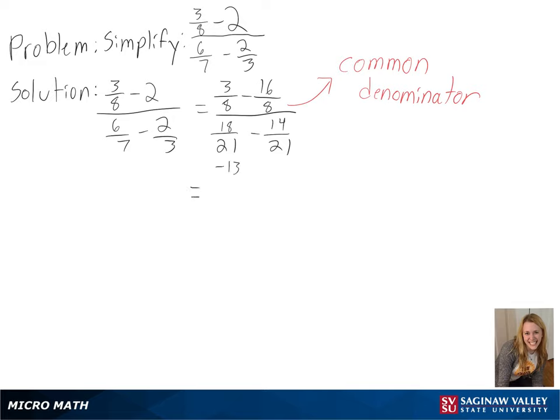Now we are able to subtract these as usual, and we get negative 13 over 8 in our numerator and 4 over 21 in our denominator.